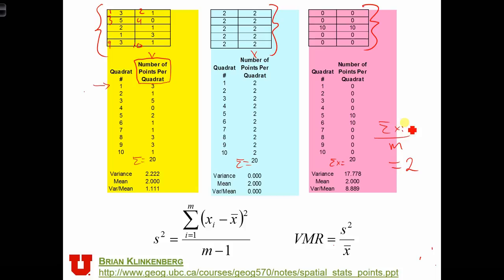So x bar equals 2. In each of these three cases, it's the same, because the sum of x is the same. We can calculate the mean of x, that's 2.